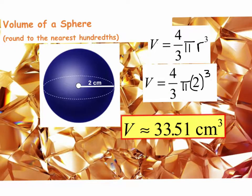Okay, for the first example, we need to find the volume of a sphere, and we're going to round our answer to the nearest hundredths. Here's the formula to use: V equals four-thirds pi r cubed. We'll plug in the radius to be two, because it gave us the radius as two centimeters.